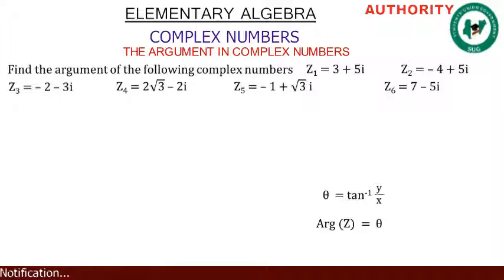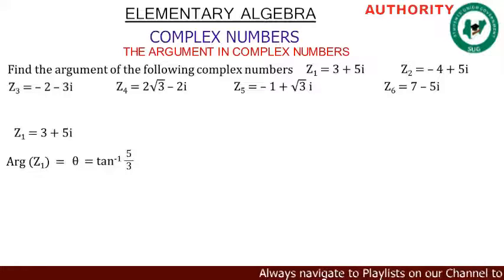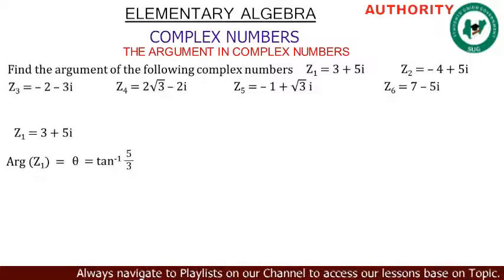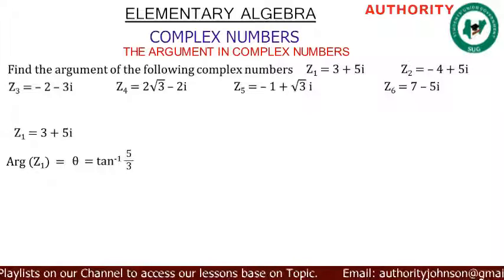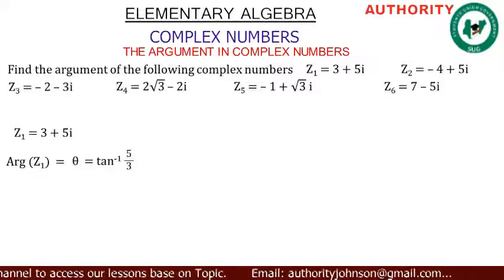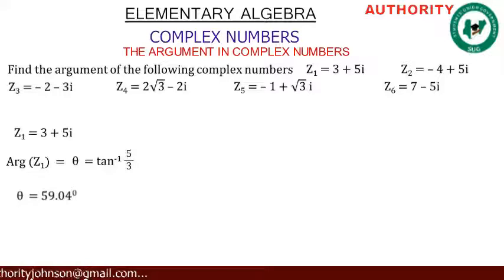For z1 = 3 + 5i: arg(z1) = θ = tan⁻¹(y/x), where y = 5 and x = 3. So θ = tan⁻¹(5/3), which gives us 59.04°.